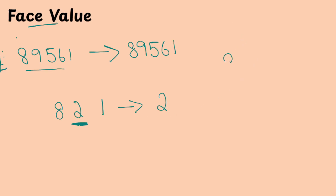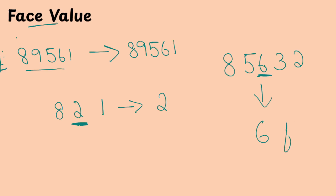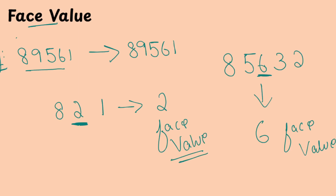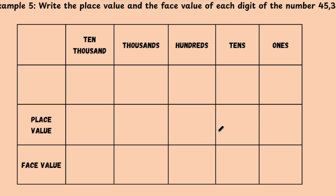Let me give you one more example. If I give you 85,632 and ask for the face value of 6, the answer is 6. 6 is the face value. This is how you find the face value. The same digit is always the answer for face value.